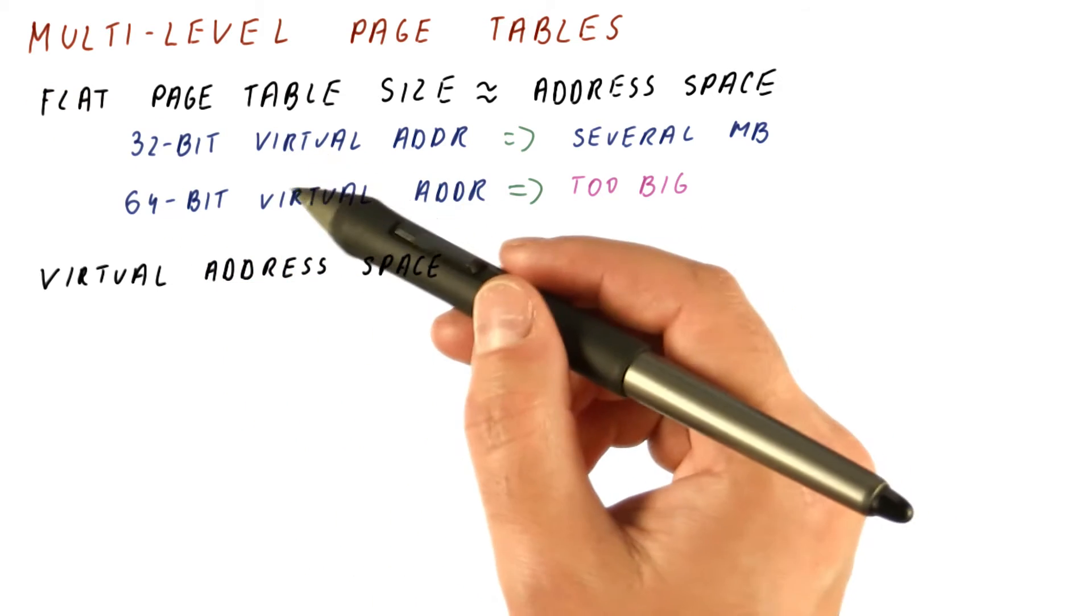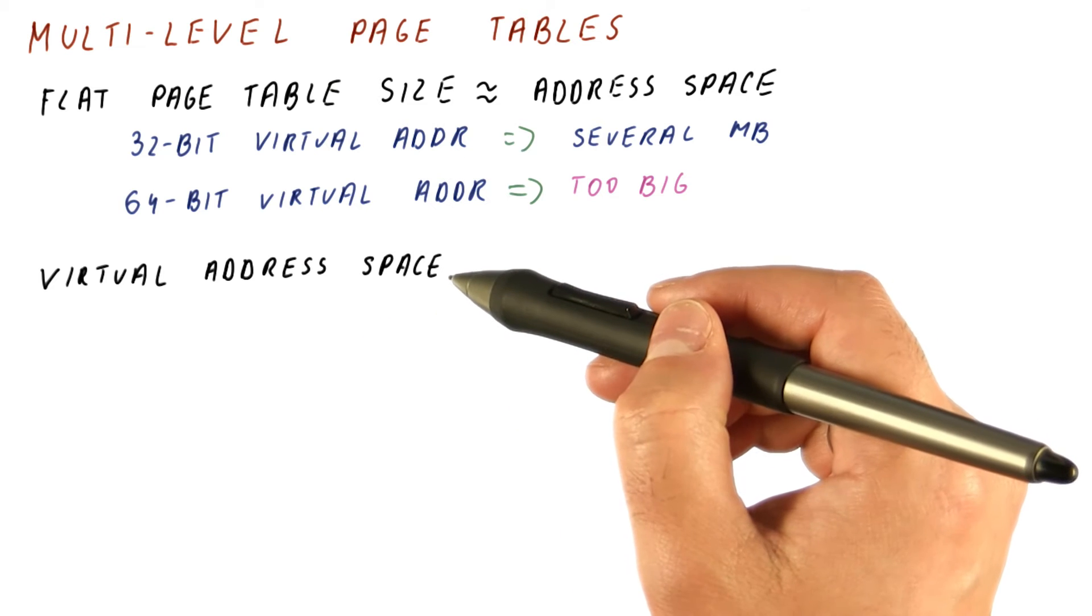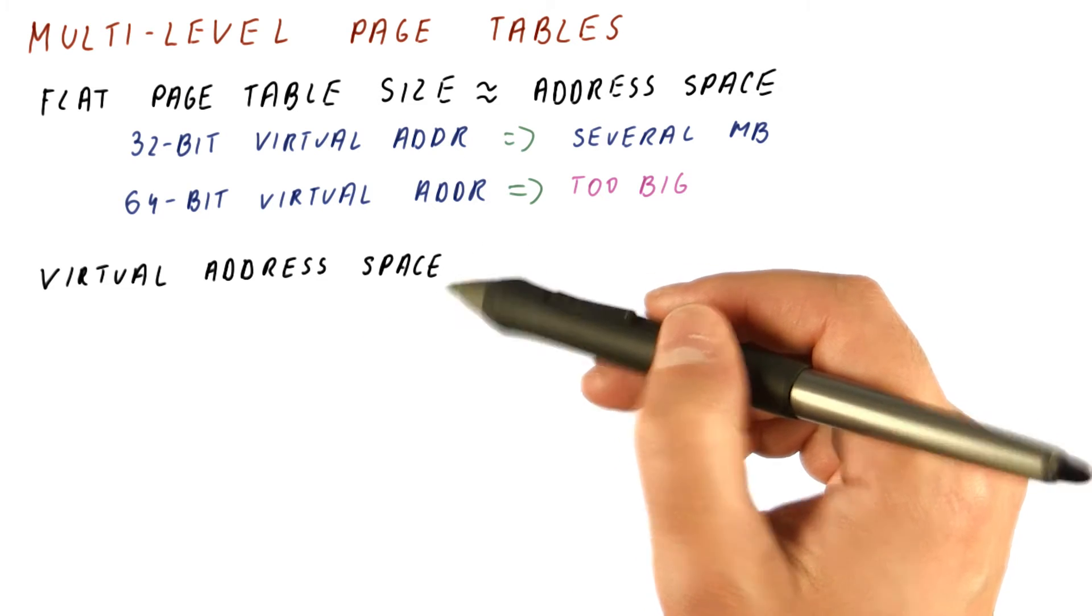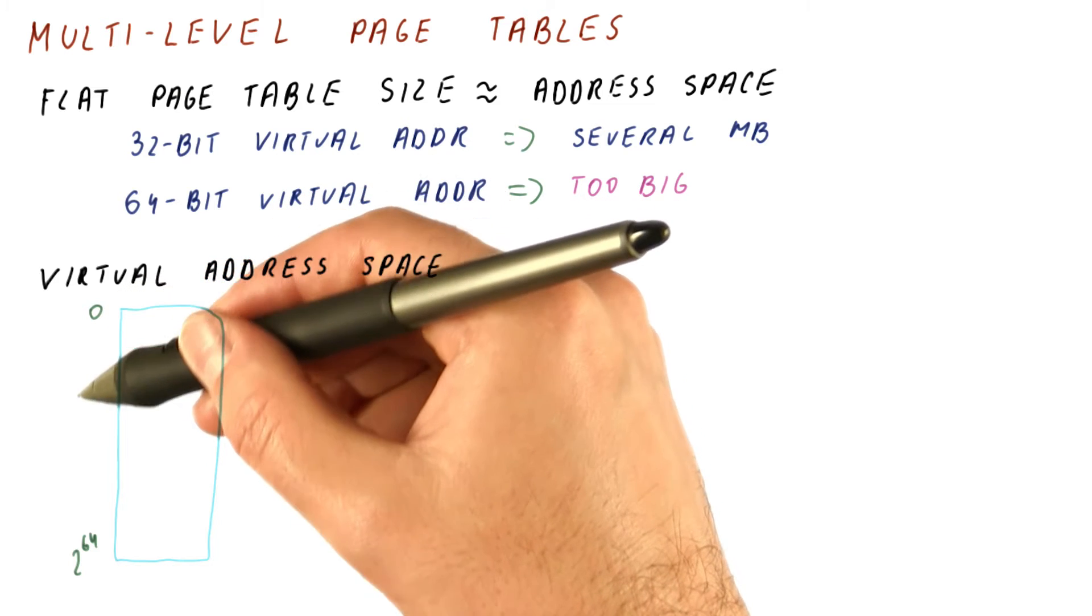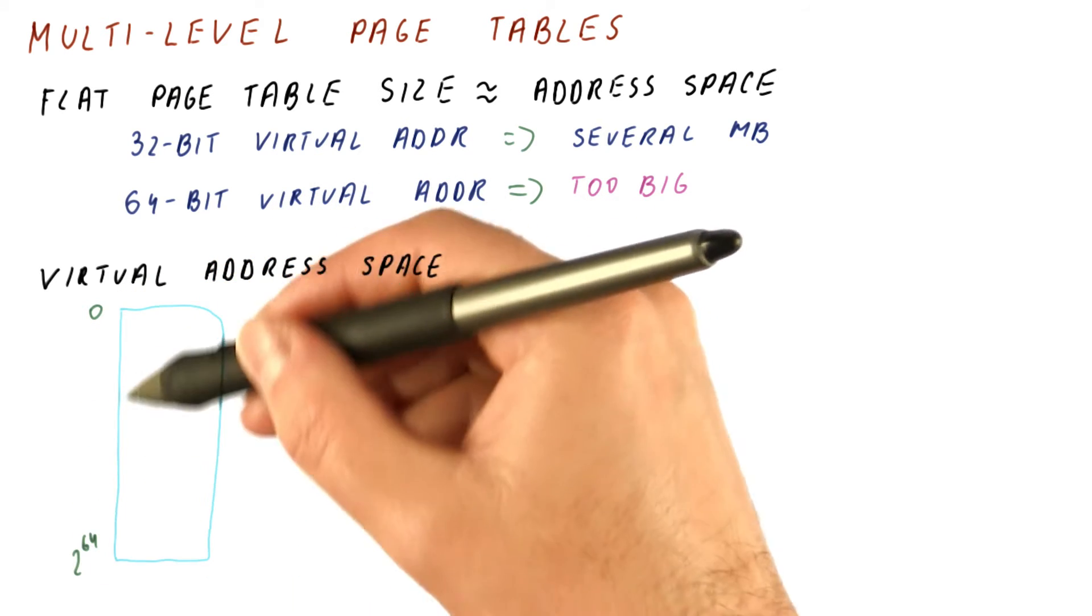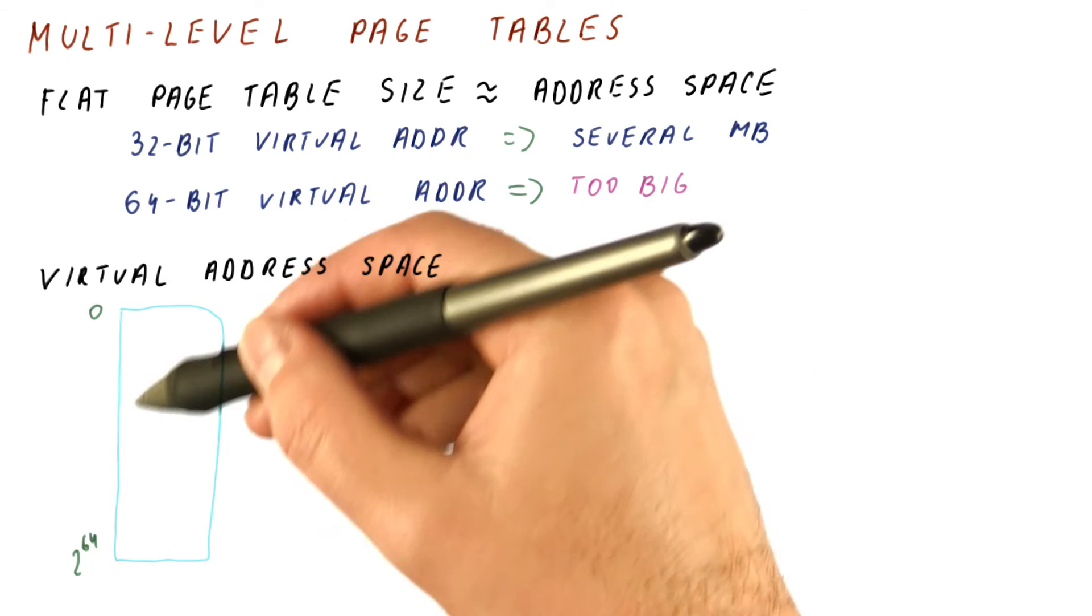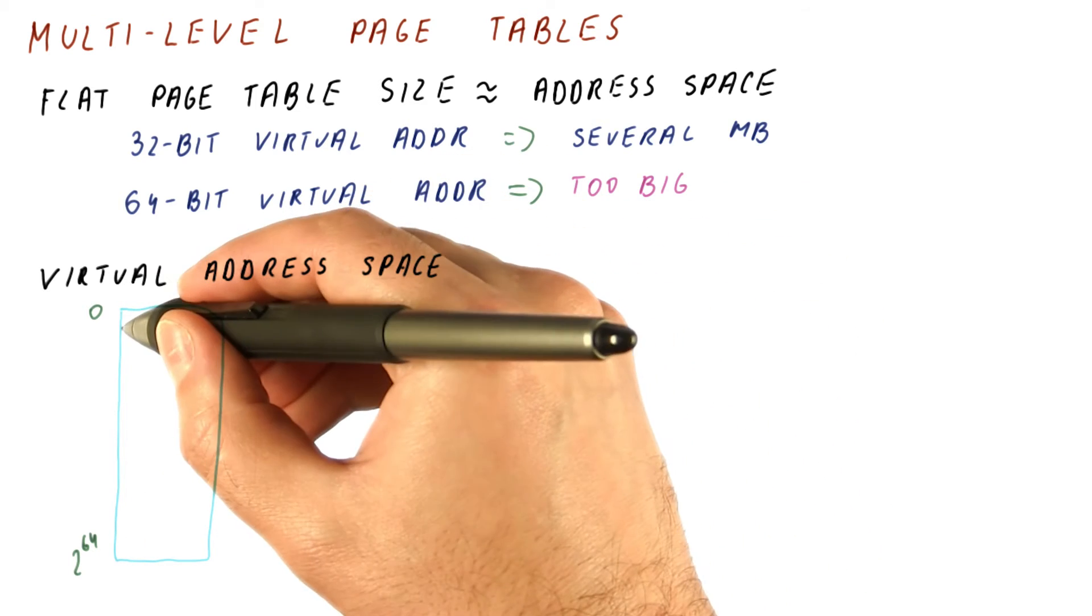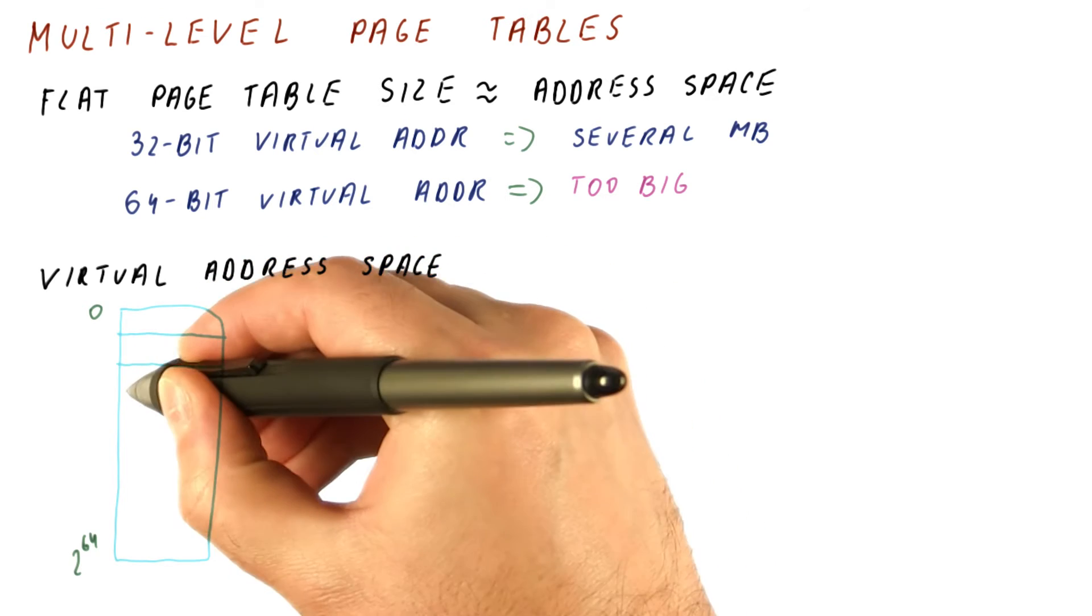The idea of why multi-level page tables work has to do with how the virtual address space is usually used by the applications. Recall that the application thinks it can address memory with 64-bit addresses, so it has this many potential memory locations it can access. But in reality, the application only allocates memory like this.